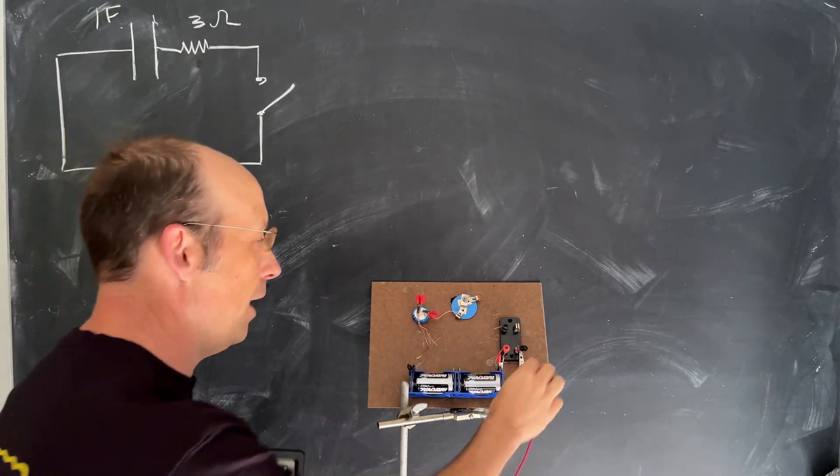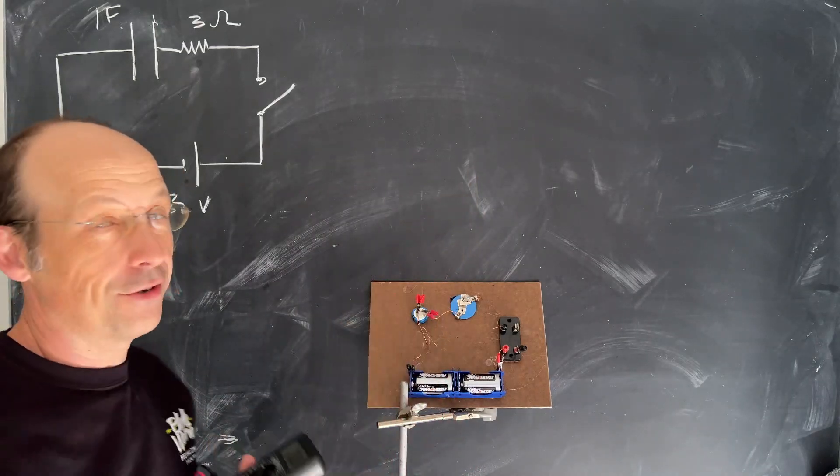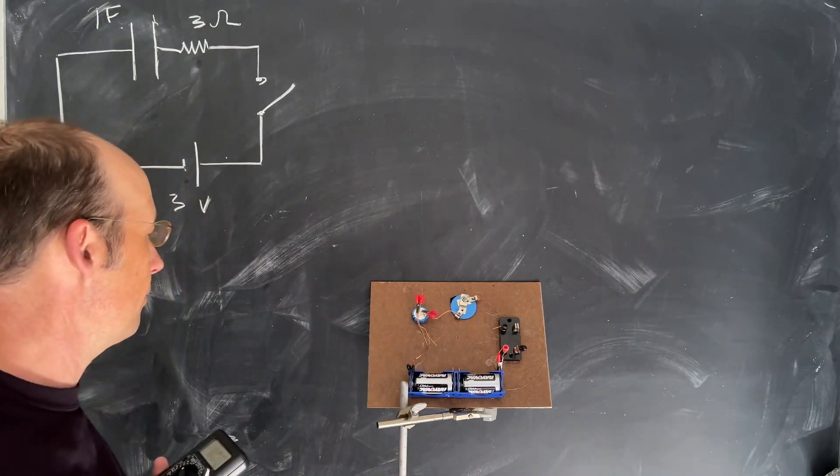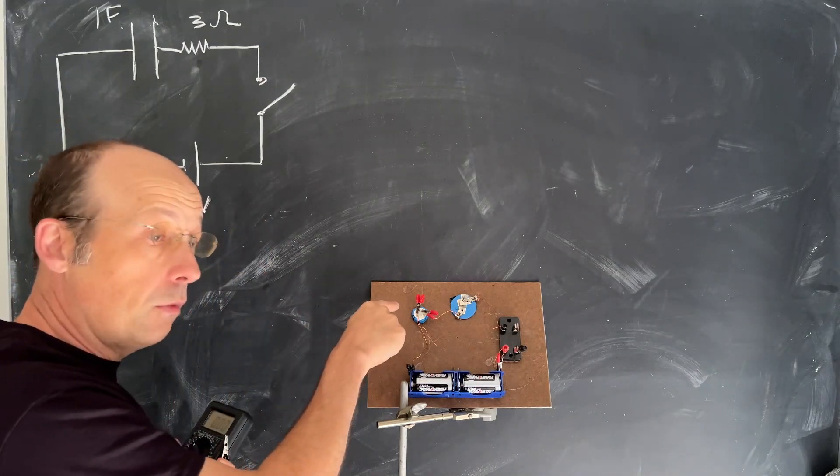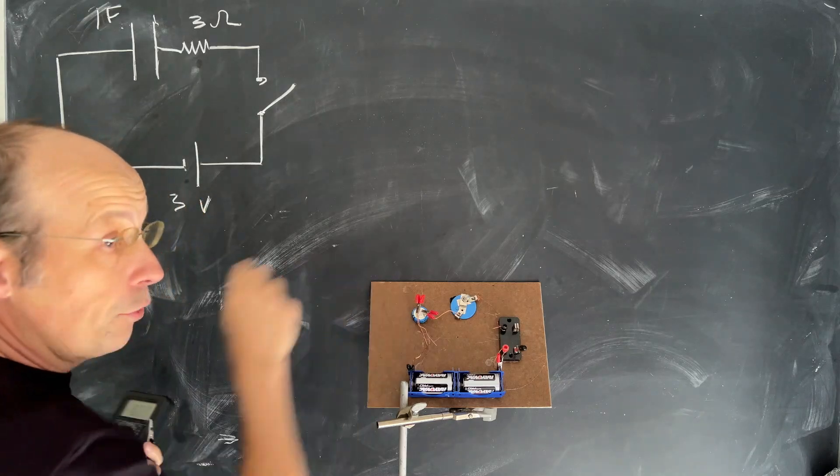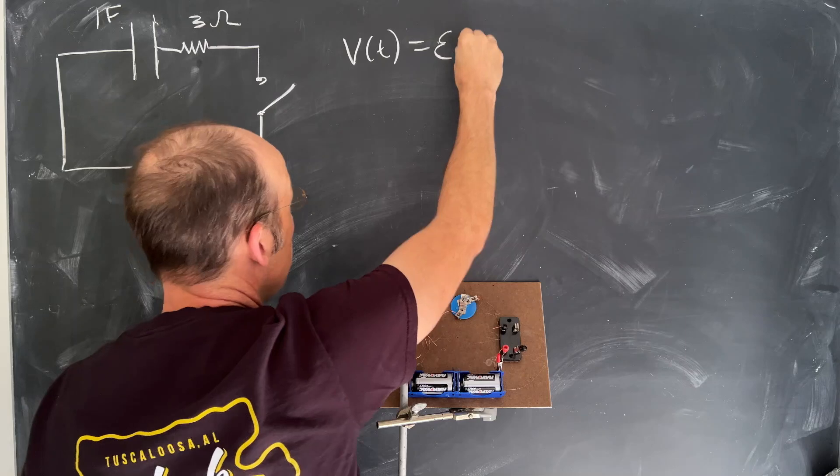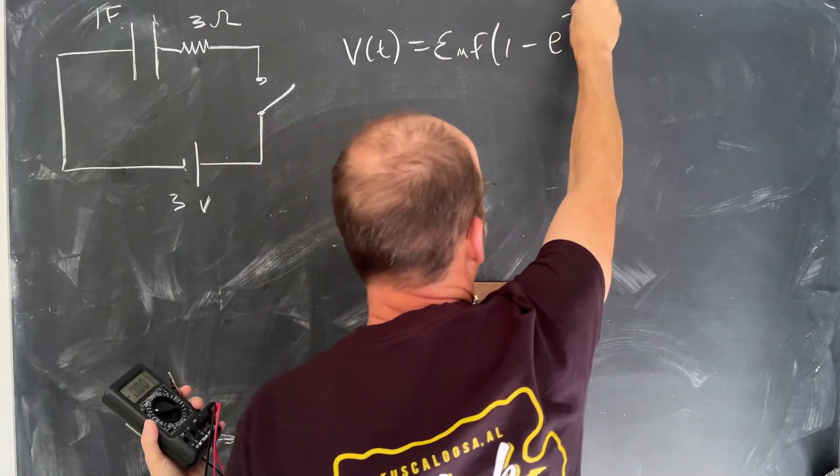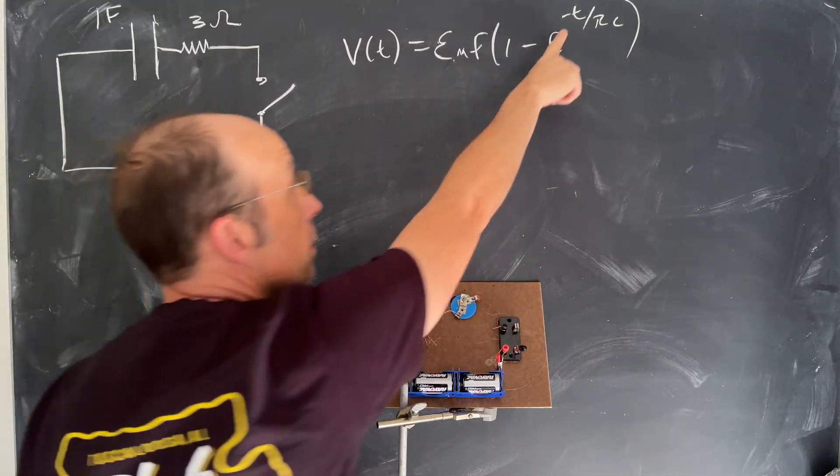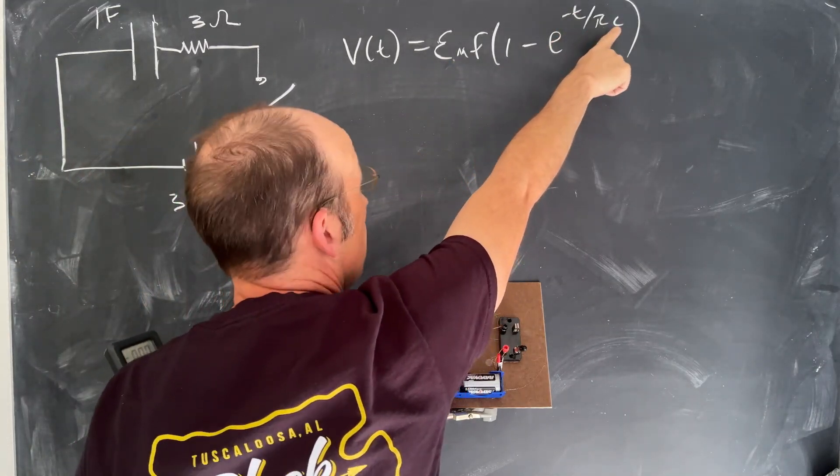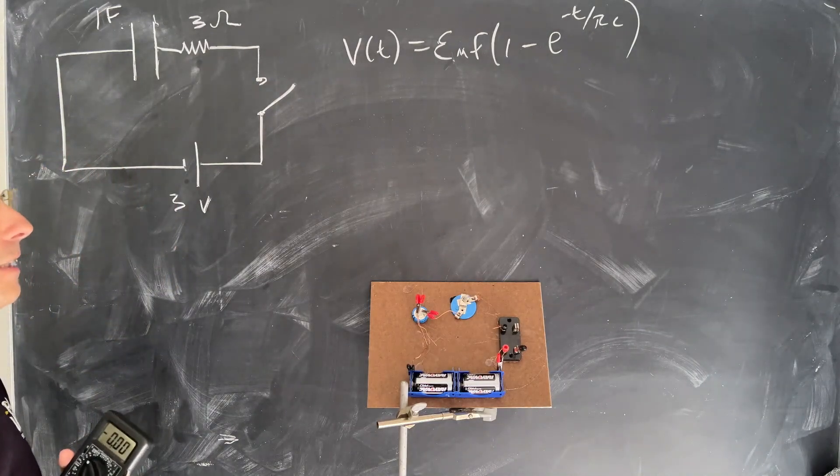And in fact, some weird stuff can happen there. I'll tell you right now. We can talk about it later. But some weird stuff can happen depending on your voltmeter when you measure that. Okay. So what I want to do now is to model. We already know that the voltage across the capacitor as a function of time looks like this: EMF(1 - e^(-t/RC)). I know what that should be. This is 3 volts, T is time, 3 ohms, 1 farad. But I want to get another way to plot that same voltage.